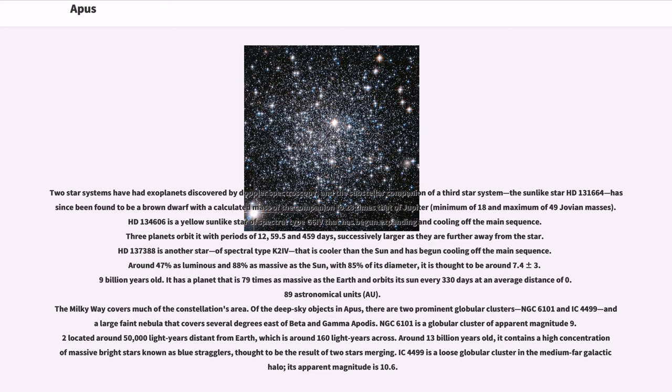HD 137388 is another star, of spectral type K2 IV, that is cooler than the Sun and has begun cooling off the main sequence. Around 47% as luminous and 88% as massive as the Sun, with 85% of its diameter, it is thought to be around 7.4 plus or minus 3.9 billion years old. It has a planet that is 79 times as massive as the Earth and orbits its Sun every 330 days at an average distance of 0.89 AU.